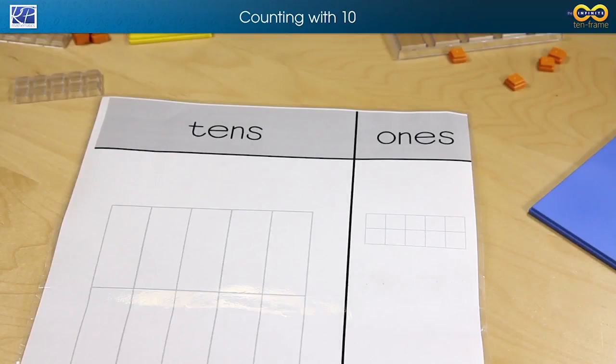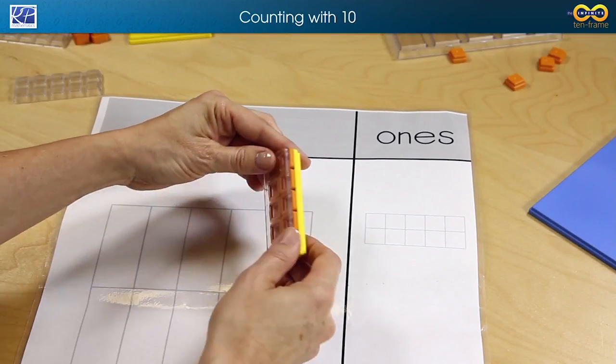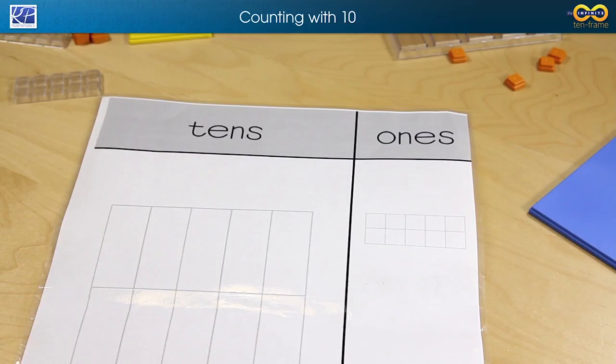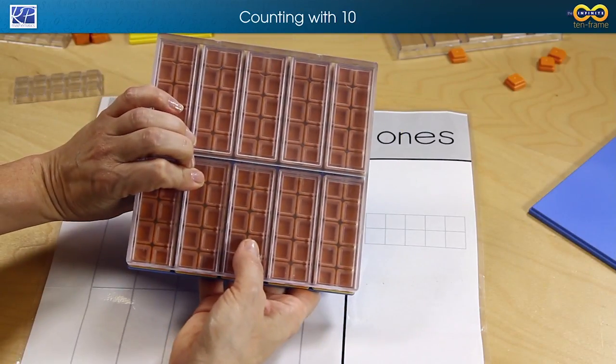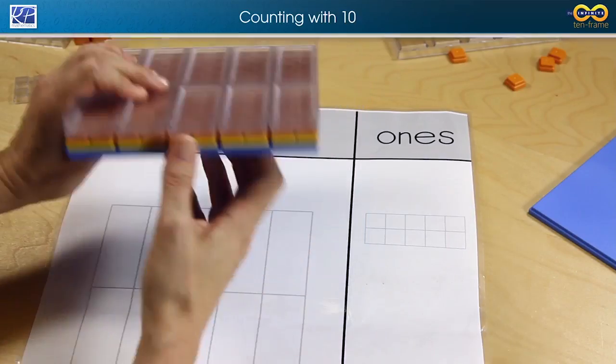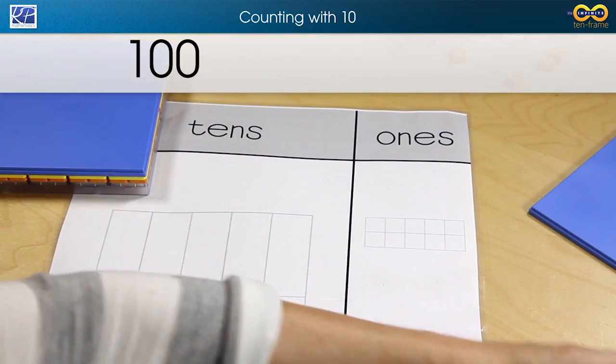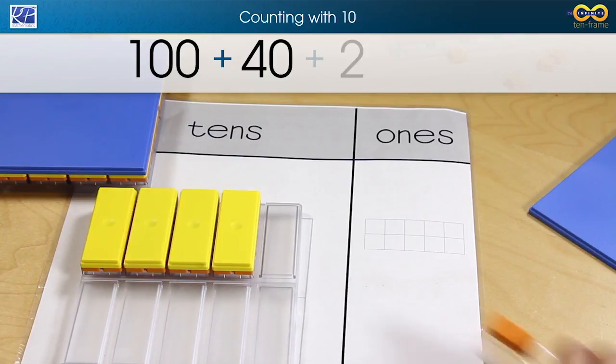Once students have come to understand that one group of 10 is comprised of 10 ones and one group of 100 is comprised of 100 ones, they can use that understanding to build numbers such as 142.